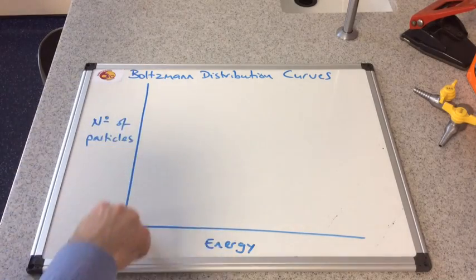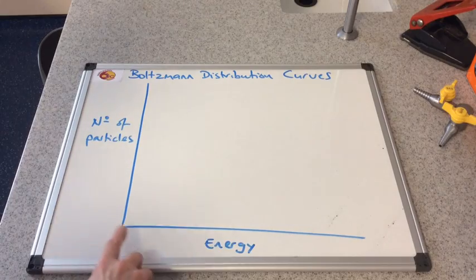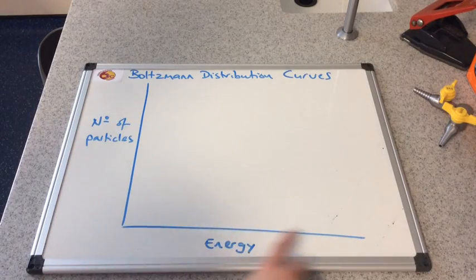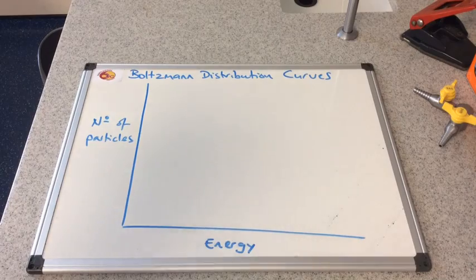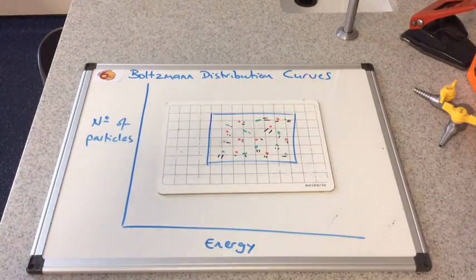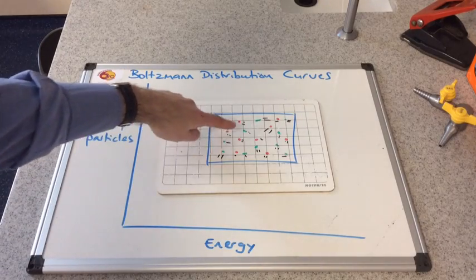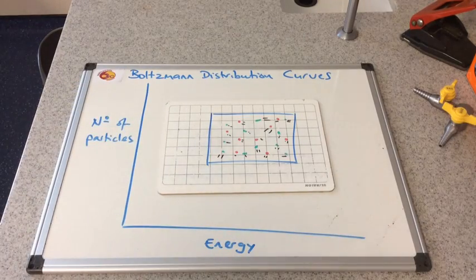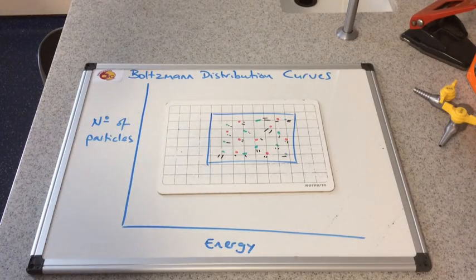So we have the two axes: the y-axis which is the number of particles, and the energy axis is the x-axis. I'm just going to bring back something I used in a previous video where I talked about the reactions between the green particles and the red particles.